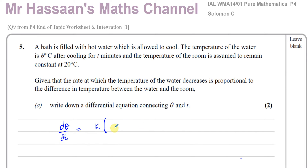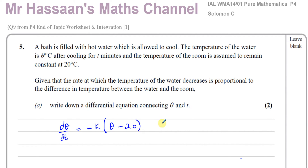You're going to have the difference between the water and the room temperature. If you put the water temperature first, take away the room temperature, you get θ minus 20. You have to put a minus here, because θ minus 20 is going to be a positive value, and we know the temperature is decreasing — it's going to have a negative gradient. θ starts off more than 20, it's hot, and then cools down towards 20 degrees Celsius, the room temperature. So you have to put a minus in front.